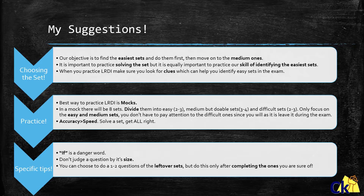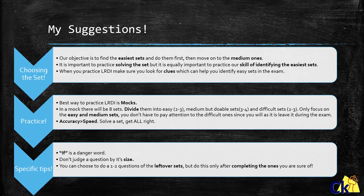Here are my suggestions. The first point is about choosing the set. Our objective is to find the easiest sets and solve them first. However, when we practice, it's not just important to know about Venn diagrams and arrangements and be able to solve them. One skill which a lot of students don't pick up is the skill of identifying the easiest sets. There will be students who can solve each and every DI or LR question, but the major deal is: can you identify the sets which are the easier ones out of the eight? That is a very difficult skill to master and is something you will only learn through experience.